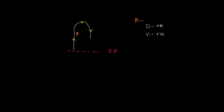Before turning, the object had to slow down to a stop and then started to move backward. Let's call this position B. At position B, displacement is positive because the object is still above the starting point, just like at A. But velocity is actually zero because the object is momentarily stationary at point B.